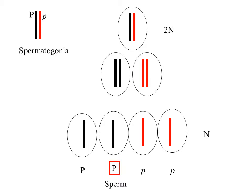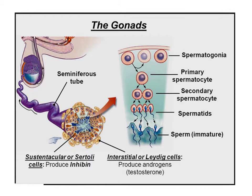In this slide we have a spermatogonia. This is the original cell that produces the sperm. The spermatogonia is deep within the testicles. It is attached to the interstitial cells, or the Leydig cells. This spermatogonia is going to go through a mitotic division and produce a clone. One of those cells will then go through meiosis one and two to produce four sperm. Each sperm will be haploid.